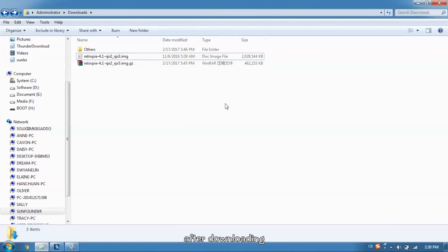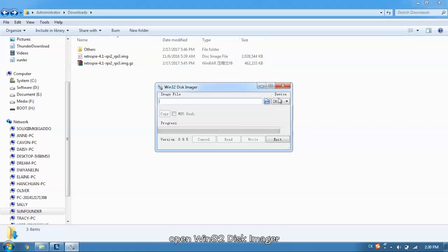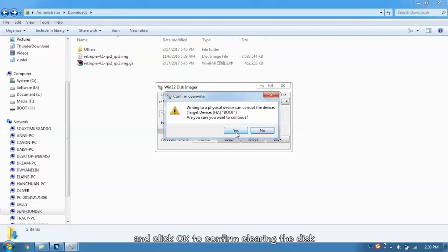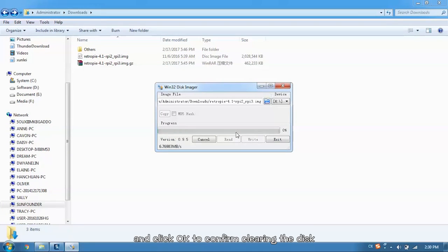After downloading, unzip the file and you will get an image file. Open Win32 Disk Imager and choose the disk the TF card is in, then choose the image file and click Write, and click OK to confirm clearing the disk. The writing needs some time, so we can now go back to install the box.